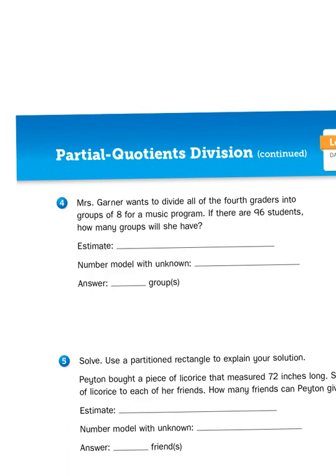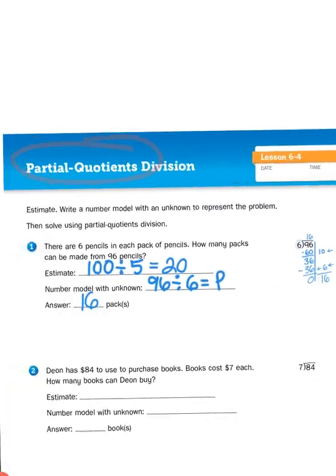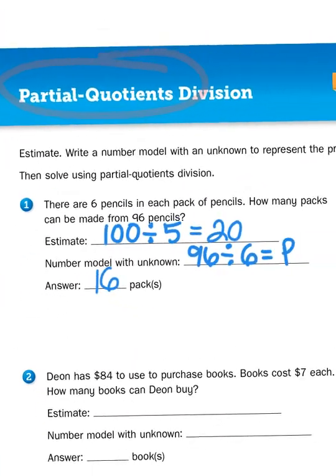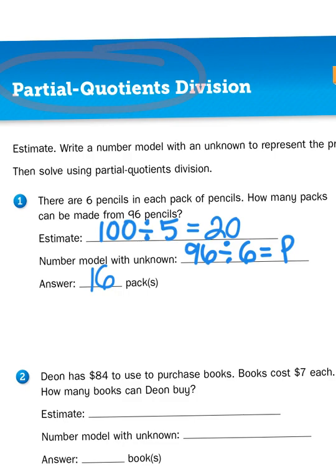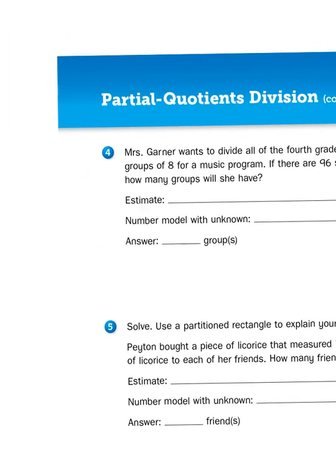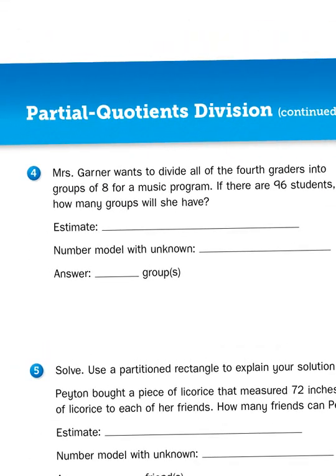Now the first thing I need to do is come up with an estimation. Well, in my first estimation for 96 divided by 6, I rounded 6 down to 5 and rounded 96 up to 100. If I use that same approach, I'm going to round 96 up to 100. I'm going to round 8 up to 10. So my estimation is going to be 100 divided by 10, which of course is going to be 10. So my answer is going to be closer to 10 than it is going to be 20 like it was in my estimation for 96 divided by 6.